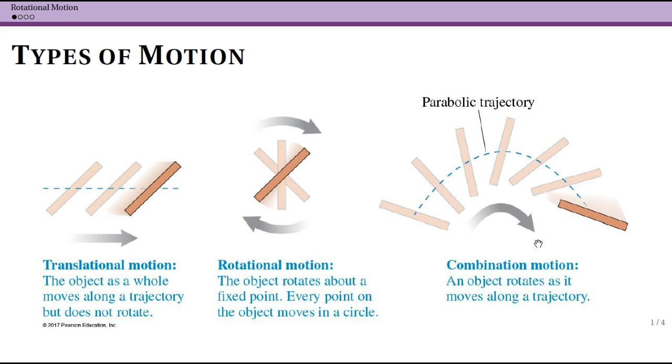As it goes through the air, the center of mass is following the parabolic trajectory that we learned about in two-dimensional kinematics. But then there's also rotation happening around the center of mass. So combination motion is the superposition—the sum of rotational motion and translational motion. Translational motion is something we've already studied. We're now going to study rotational motion. After a little bit, we're going to be combining them together, but right now we're going to focus purely on rotational motion.